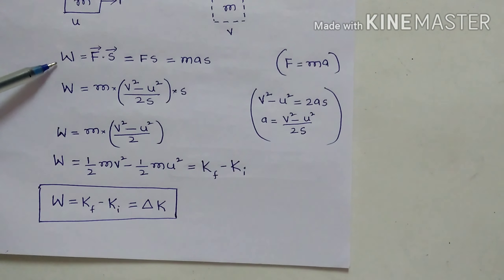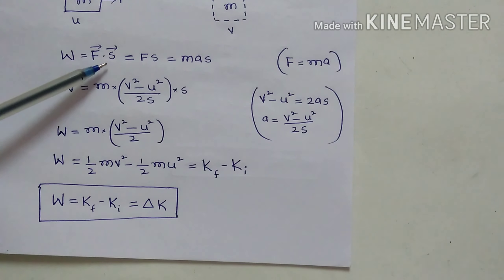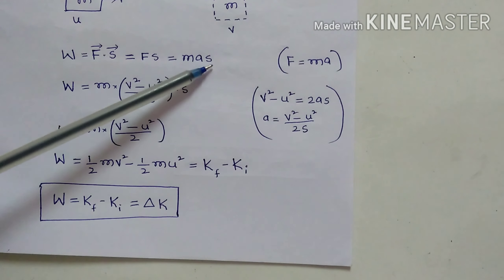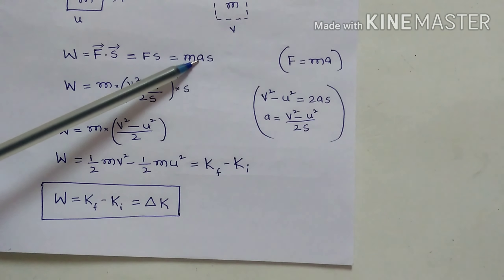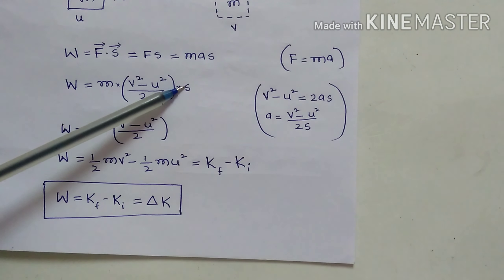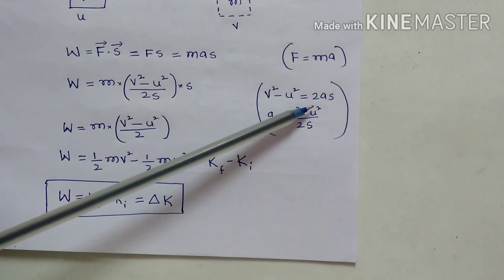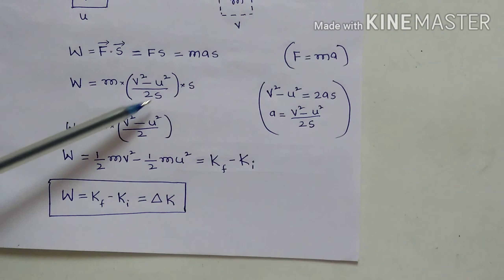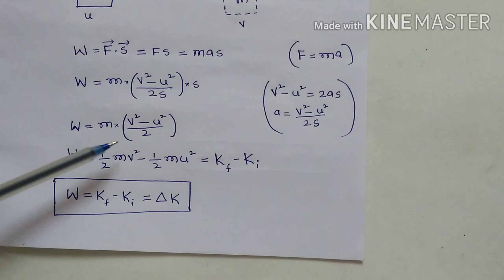So final kinetic energy is Kf. Work done W = F·s = Fs because F and s are along the same direction (cos 0° = 1). F = ma from Newton's second law, so W = ma·s. Now using the kinematic equation v² − u² = 2as, we get a = (v² − u²) / 2s. Substituting, W = m × (v² − u²) / 2s × s, and s cancels.